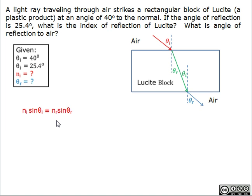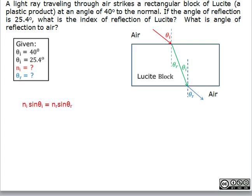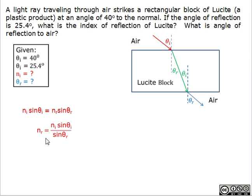Okay, so first we need to calculate the index. This is the formula that we're going to use, and we need to convert this formula into n_r equals n_i sine theta i over sine theta r. In order to find the index, we need to substitute the values, and that will give us the result of 1.50.